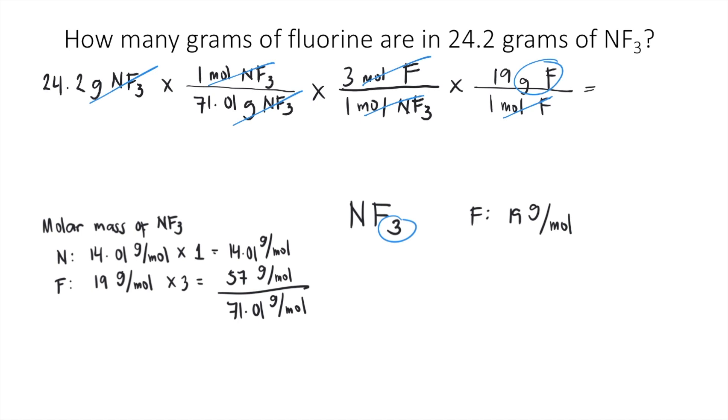So 24.2 times 1 divided by 71.01 times 3 divided by 1 times 19 divided by 1. That is approximately equal to 19.4, and that's grams of fluorine. So the answer to this question is 19.4 grams of fluorine.